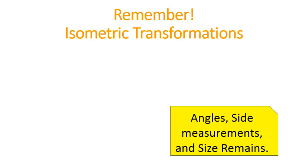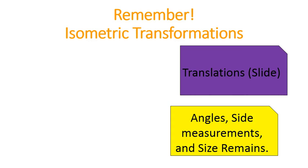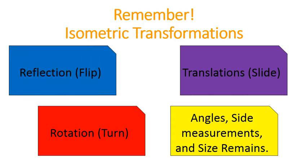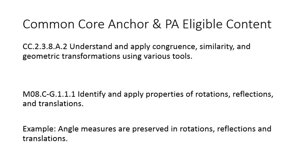Quick recap on isometric transformation. The angles, side measurements, and size remain the same. We've got translation. We've got rotation. And we have reflection. I hope that lesson was helpful for you. Here is your Common Core anchor and your Pennsylvania eligible content. Have a wonderful day.